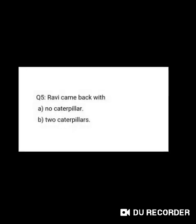Now, question number five. Ravi came back with — A. no caterpillar, B. two caterpillars. Good, Gwinkans. It is two caterpillars.